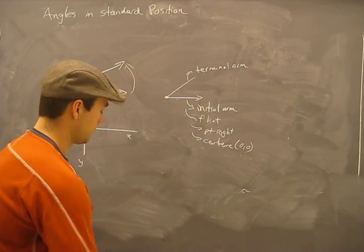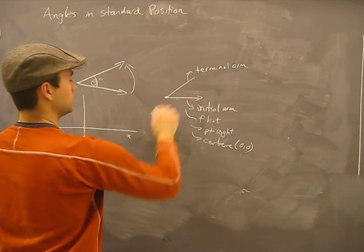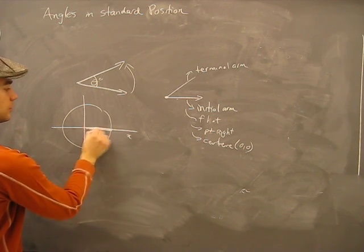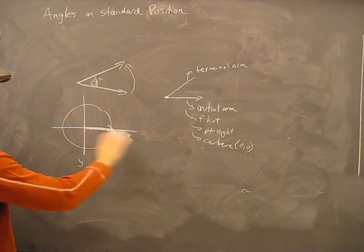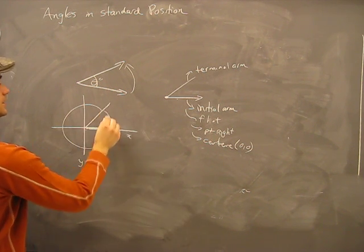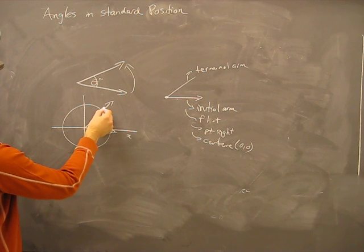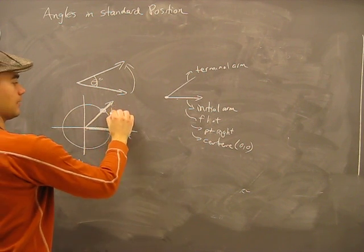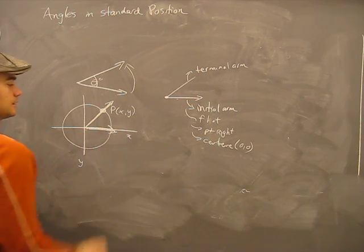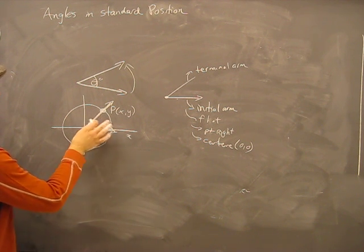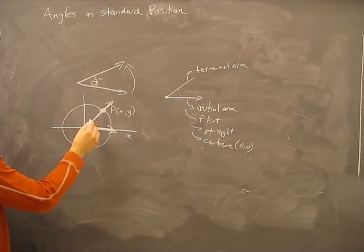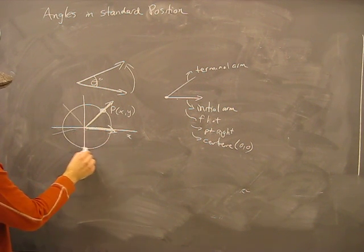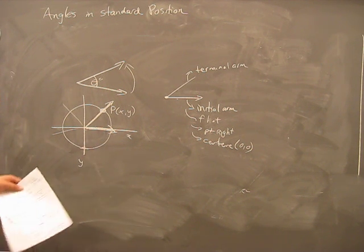Wherever it stops, there will be a point. On the circle here, here's our initial arm. Because it's on the X axis, it's flat, pointing right. We go up like this. This is our terminal arm here, and it'll connect the circle at some kind of point. We'll call it point P. It's at some point P where the terminal arm connects with the circle. Remember that anywhere that anything connects with the circle, it's the distance of the radius.